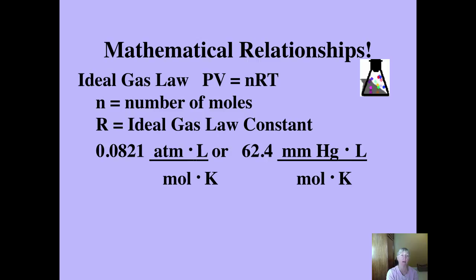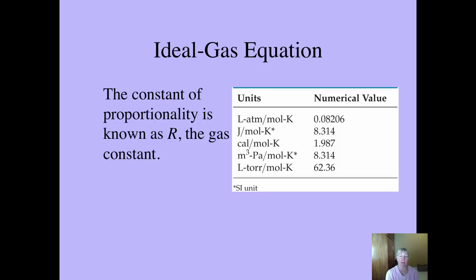Now, where did these numbers, 0.0821 liter atmospheres per mole kelvin, or 62.4 millimeters mercury per liter per mole kelvin, where did those come from? Let's take a look at how you can derive those. Notice that there is a chart here, first of all, and there's one or two more we haven't shown you yet. Here's the one that you'll be using if you have kilopascals, 8.314. We don't use this one very much. And the one we're working with, we're going to round, 0.0821 is the number you use for atmospheres, and we round to 62.4 for if it's in millimeters or torque.